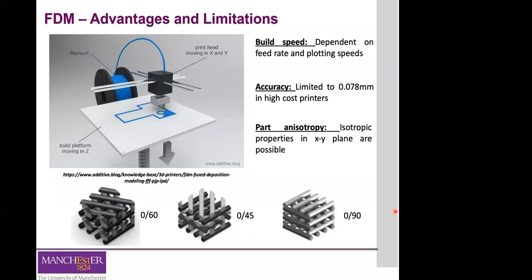Why aren't there square nozzles, if circular nozzles limit resolution? It's a very good question — it is much easier to fabricate circular or cylindrical nozzles. There is quite a lot of research into square nozzles, mainly because of the inability to create very sharp corners. Most of these are now being fabricated using additive manufacturing like powder bed fusion. But it still needs further development and study, mainly in terms of how changes in nozzle geometry affect the flow of material and consequently the geometrical and dimensional accuracy.